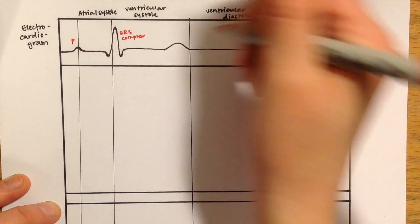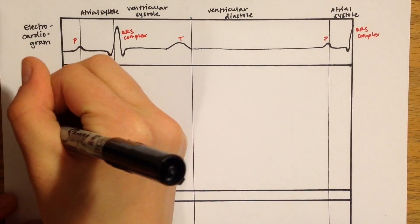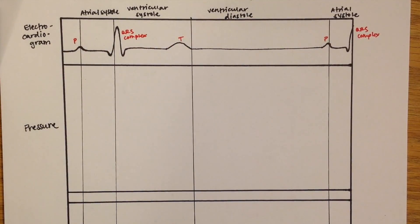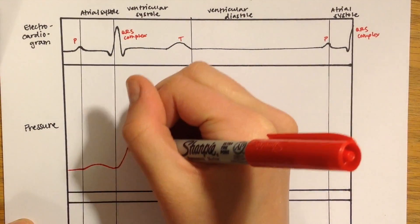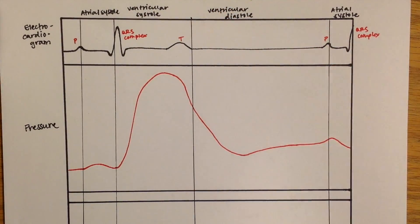Next I'll graph the pressure changes of the left ventricle, the aorta, and the left atrium to compare to each other. So first we have the large pressure change accompanying ventricular systole in the left ventricle.